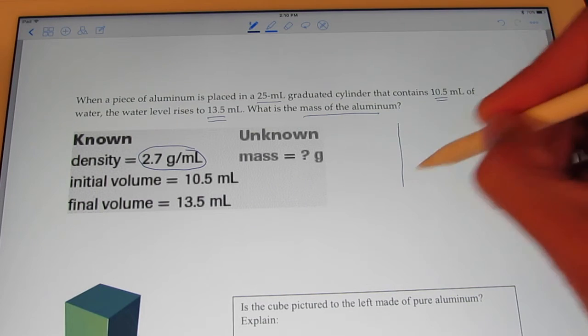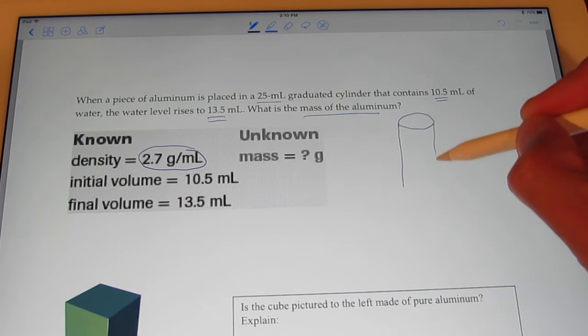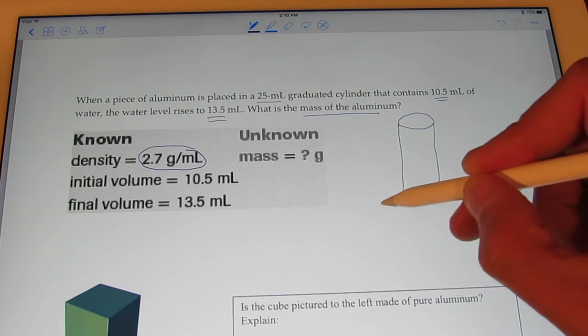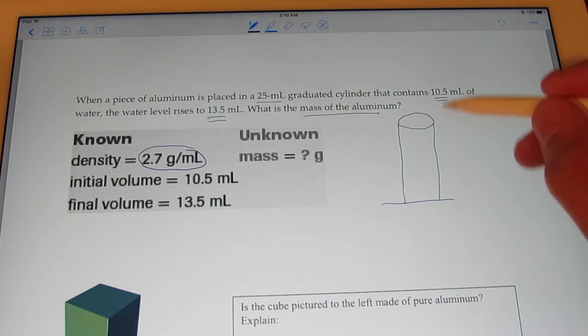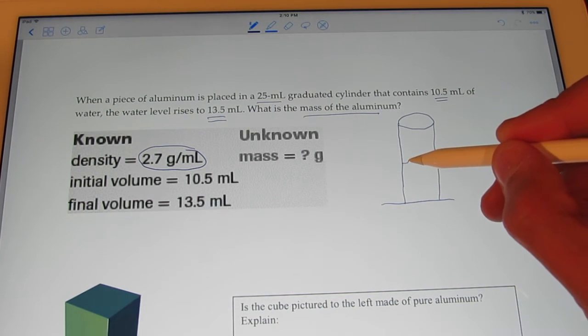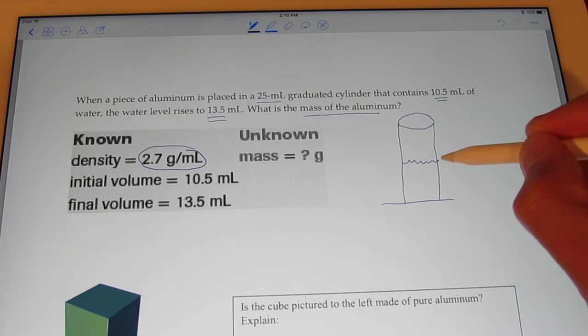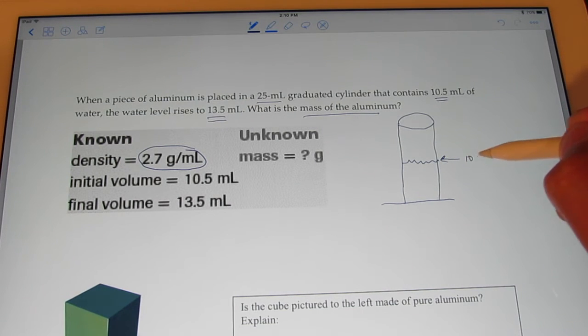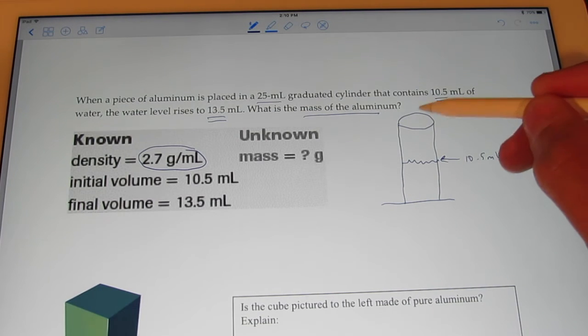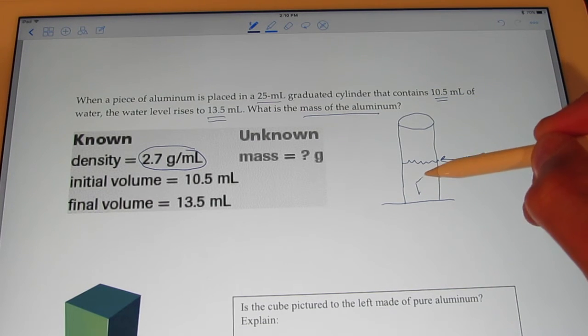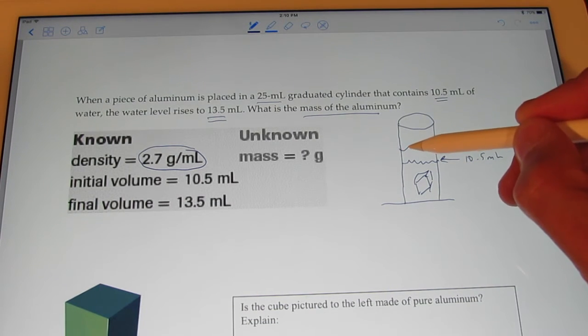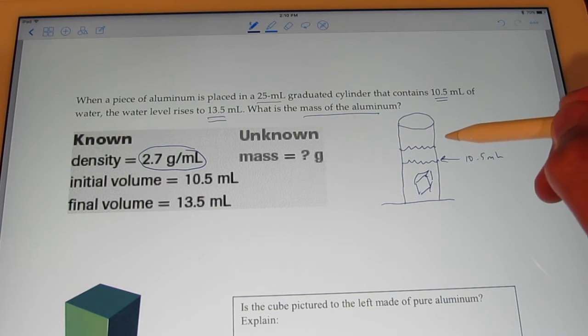If you can imagine, folks, a graduated cylinder. And we get to do this in the lab shortly. It contains 10.5 mils of water. So, here's my water. And I read that as 10.5 milliliters. Okay? Then, kerplunk, I go ahead and I put a chunk of aluminum in there. What's going to happen to the water level? That's right. It goes up to 13.5 milliliters.